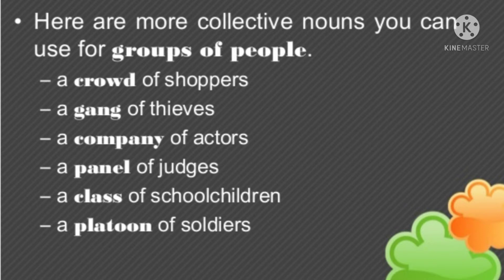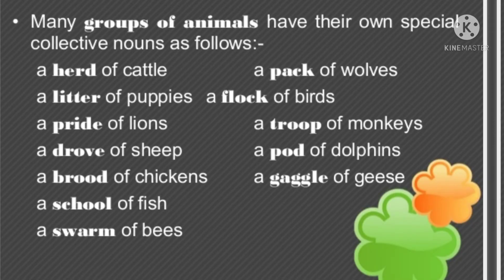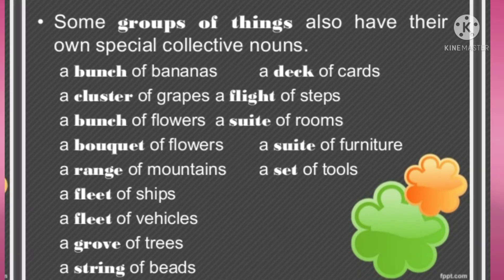Here are more examples of collective nouns for people: crowd, gang, company, panel, class, platoon. For animals we also use collective nouns: herd, litter, pride, drove, brood, school, swarm, pack, flock, troop, gaggle. For objects and other things: bunch, cluster, bouquet, range, fleet, grove, string, deck, flight, suit, set.